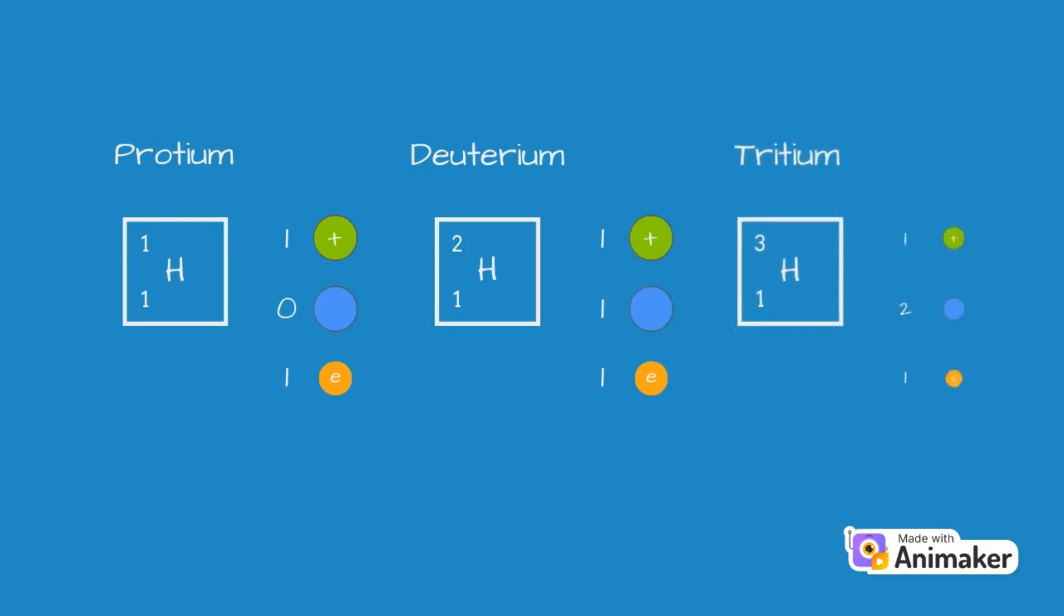Similarly, hydrogen has three isotopes: Protium with one proton, zero neutrons, and one electron; Deuterium with one proton, one neutron, and one electron; and Tritium with one proton, two neutrons, and one electron.